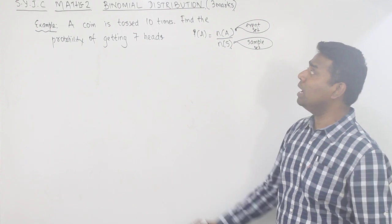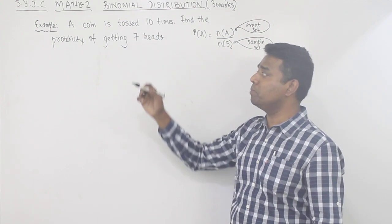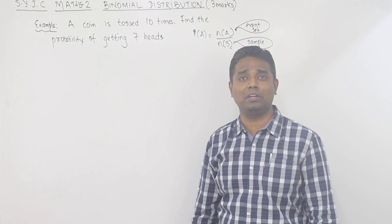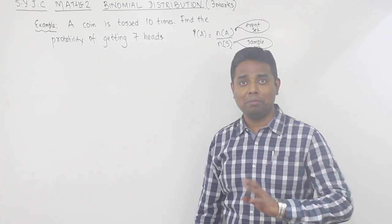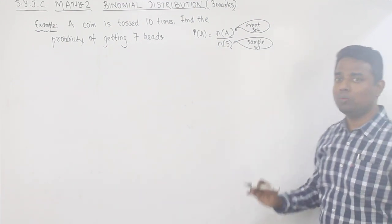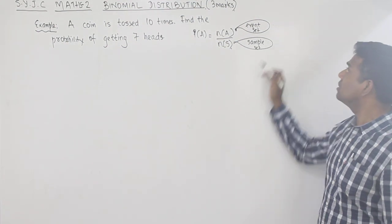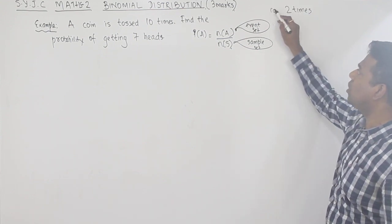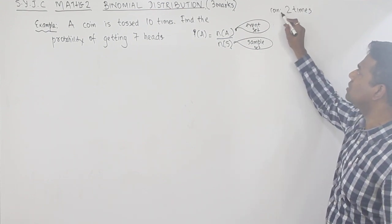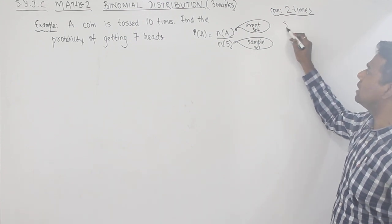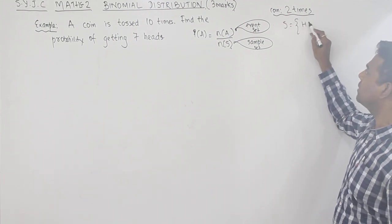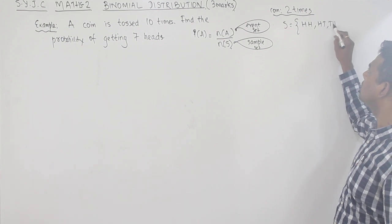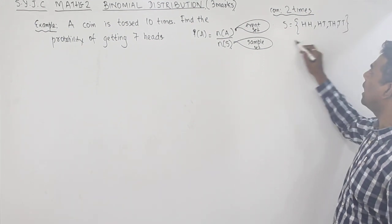Now, you have told me that the coin is being tossed 10 times. If the coin was tossed 2 times, the sample set was: HH, HT, TH, TT — that means 4 outcomes.